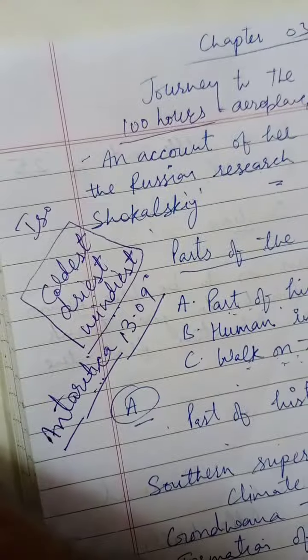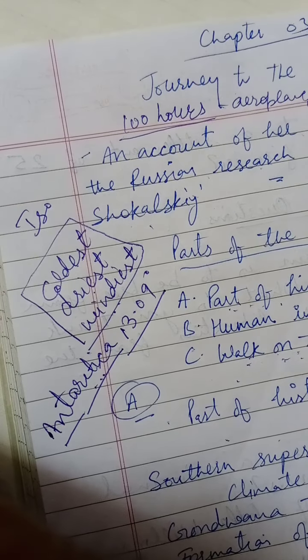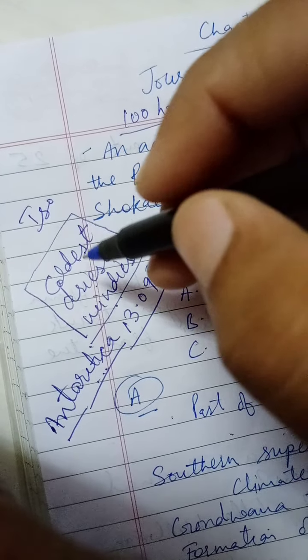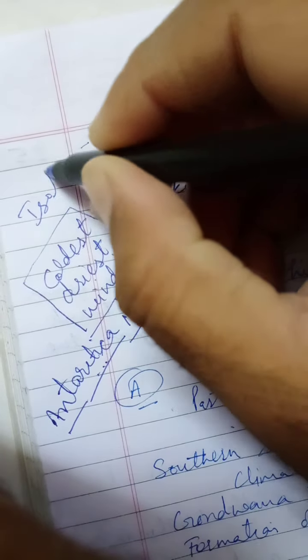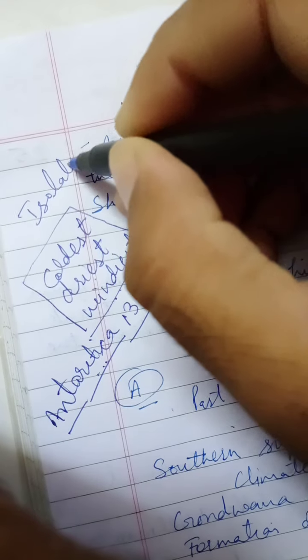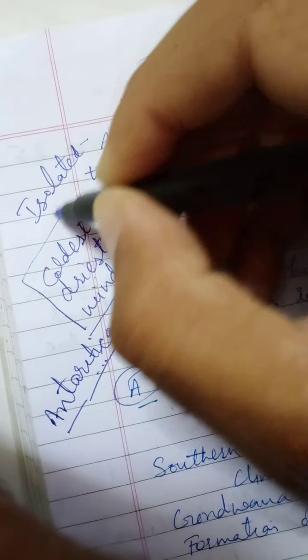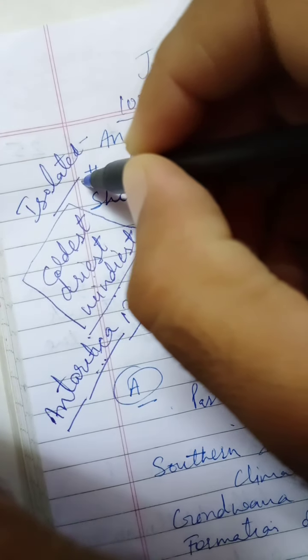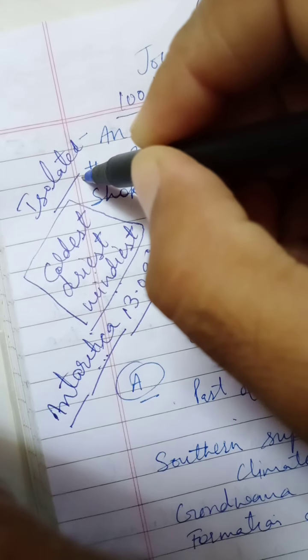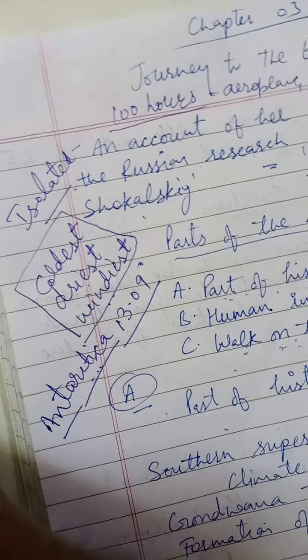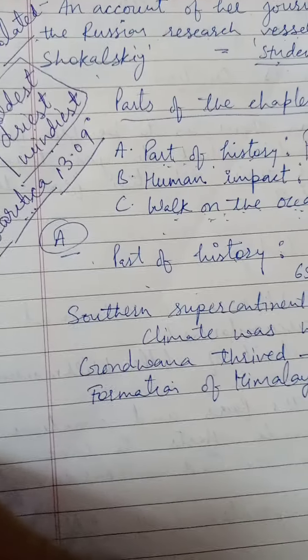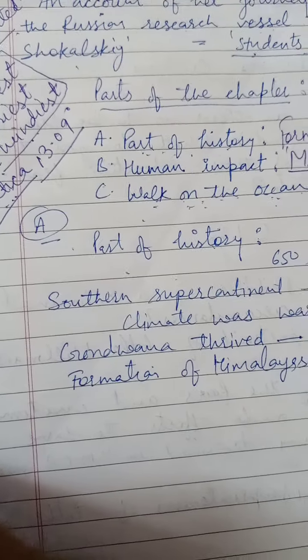Antarctica, as mentioned, is the coldest, driest, windiest, and also the most isolated continent on earth. Now let us start Part 1.